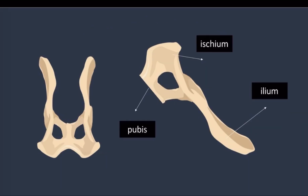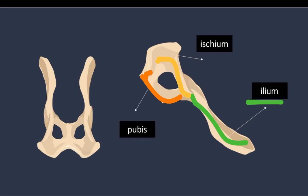The bones of the pelvic limb: the os coxae is a fused ilium, ischium, pubes, and acetabular bone. The ilium is the largest and most cranial part of the os coxae. The ischium is the most caudal part. The pubes is the smallest of the three pelvic bones, and it forms the cranial part of the floor of the pelvic cavity.